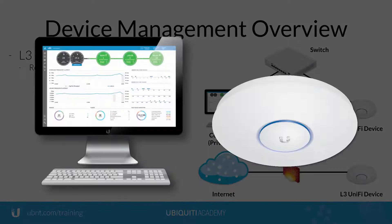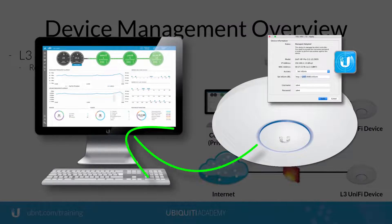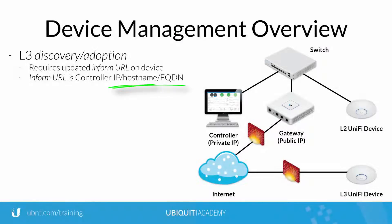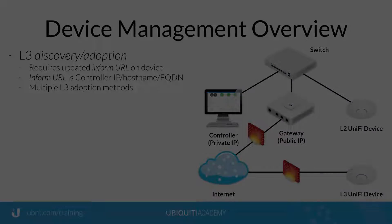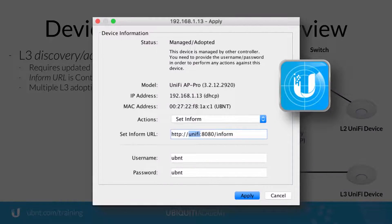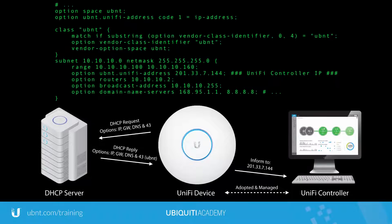The Inform URL represents the network address of the Unify controller, wherever it is on the global network, and can therefore point to any reachable network address belonging to the controller, including IP address, host name, or even a fully qualified domain name. Supported methods of updating the Inform URL for Layer 3 adoption include the Unify Discovery Tool, SSH, DNS, and DHCP Option 43.